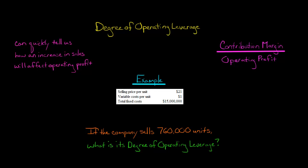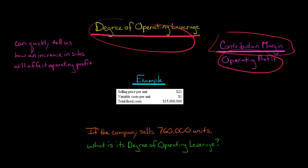In this video, we're going to do an example of how to calculate the degree of operating leverage. So if you remember, the degree of operating leverage is equal to a company's total contribution margin divided by its operating profit.